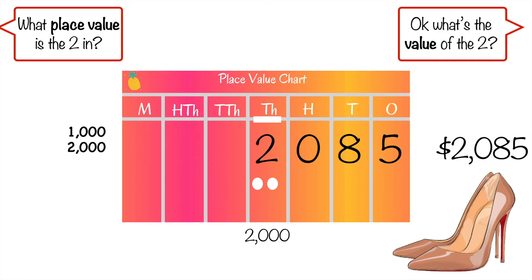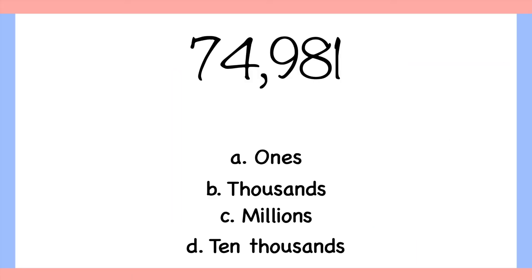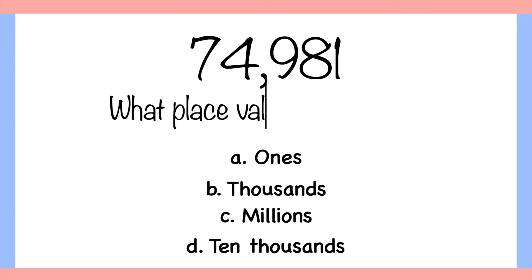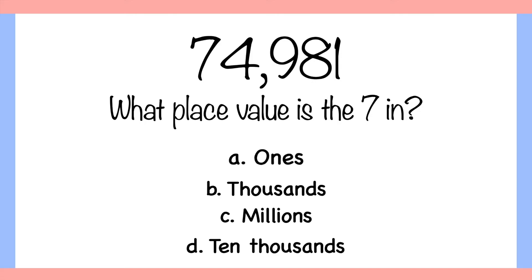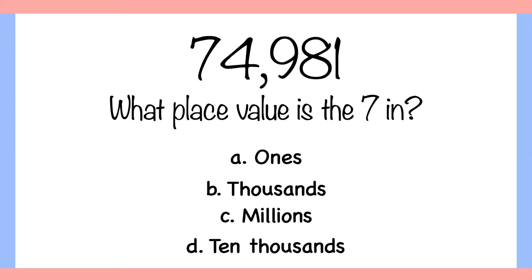Why don't you try this one by yourself? We have 74,981. What place value is the 7 in? A. Ones. B. Thousands. C. Millions. Or D. Ten thousands. Pause the video if you need time to make your place value chart.